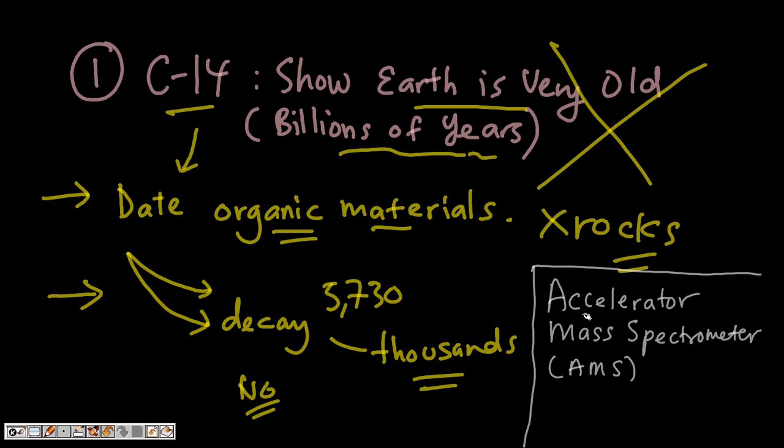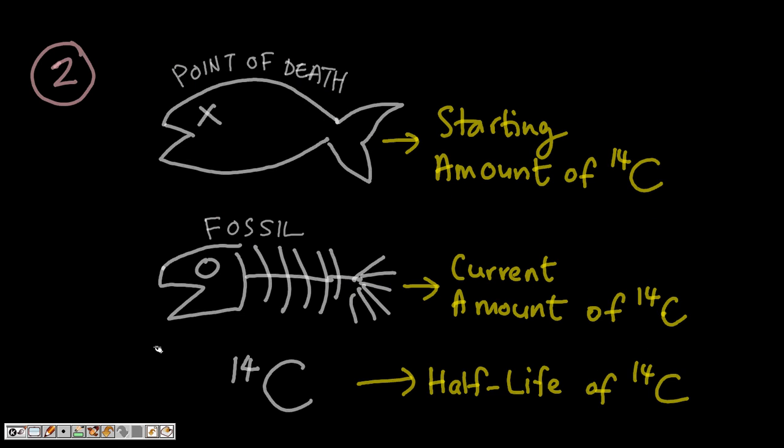In fact, the accelerator mass spectrometer AMS has an assumed accuracy of measuring only up to 80,000 years by measuring the ratio of carbon-14 to carbon-12. So definitely not in the millions of years range. So this is a misconception. Here's how carbon-14 dating works.